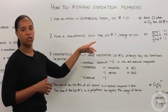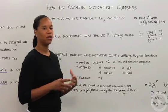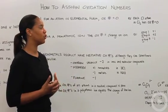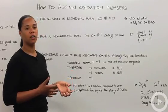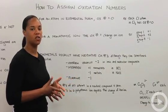Group two, they're going to lose two electrons to have a plus two charge. Your halogens, group seven, they're going to gain an electron to have a minus one charge.